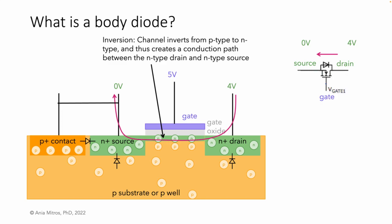Current flows from the drain at 4 volts, through the inverted channel, and to the source at 0 volts, all through n-type silicon. The NFET is on.